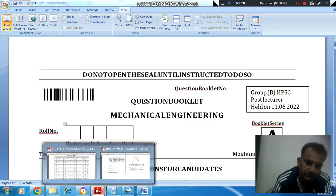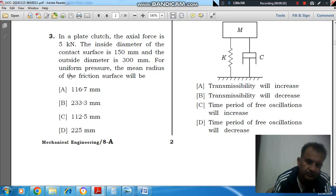Question number 3. In a plate clutch, the actual force is 5 kN. The inside diameter of the contact surface is 150 mm and the outside diameter is 300 mm. For uniform pressure, the mean radius of friction surface will be: option A, 116.7 mm, option B, 233.3 mm, option C, 112.5 mm, option D, 225 mm.